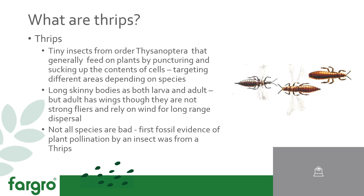So first of all, what are thrips? Thrips are tiny insects, often about a millimetre long. They generally feed on plants, but there are also predatory thrips. They have mouthpieces that are adapted to puncture and suck up the content of cells, and will target different areas of the plant depending on the species.